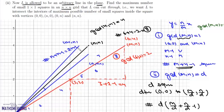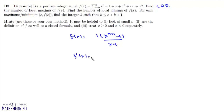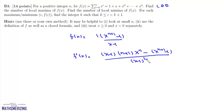In B3, we have f(x) equals 1 plus x plus x² up to xⁿ. This is clearly continuous and differentiable. We write f(x) as a GP sum: (x^(n+1) − 1) upon (x − 1). Differentiating, f'(x) equals [(x−1)(n+1)xⁿ − (x^(n+1) − 1)] upon (x−1)².